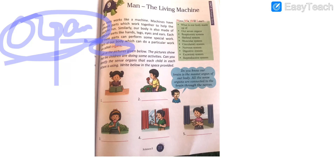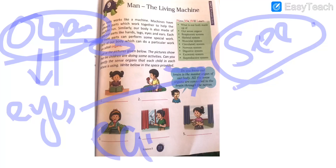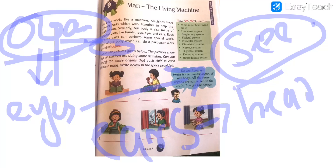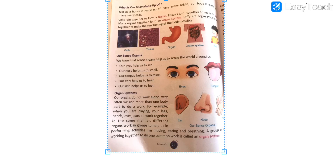An organ is the part of our body which can do a particular work. For example, eyes are the parts of our body that help us to see. Similarly, ears are the parts of our body that help us to hear. So we say eyes and ears are our organs.